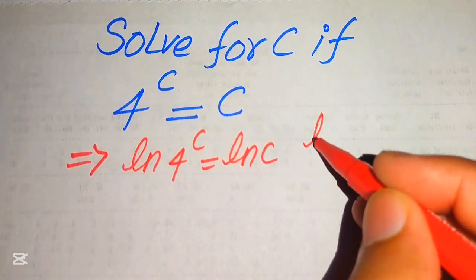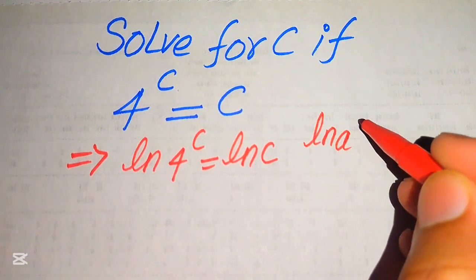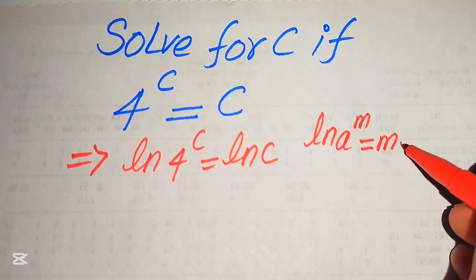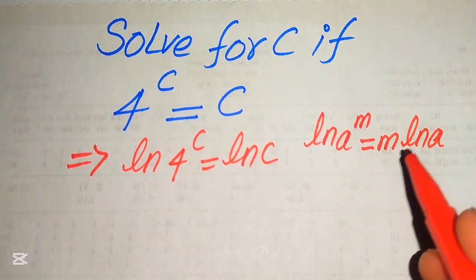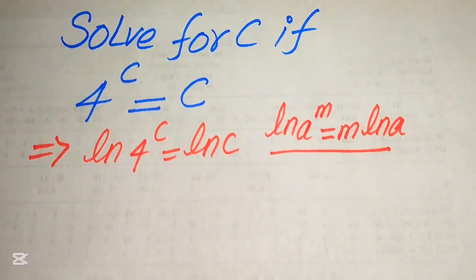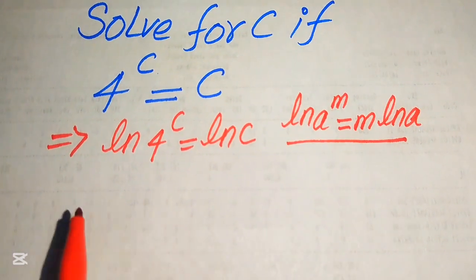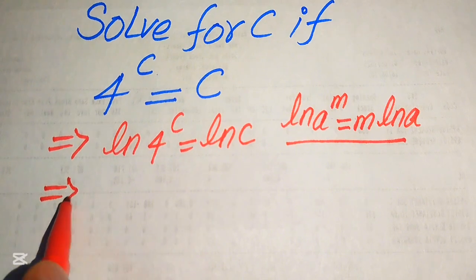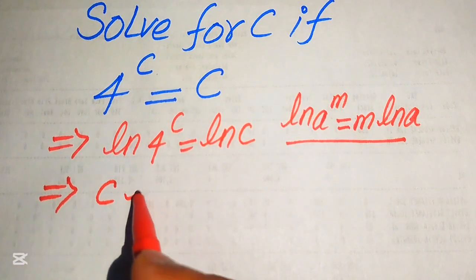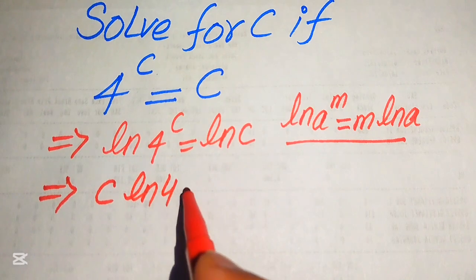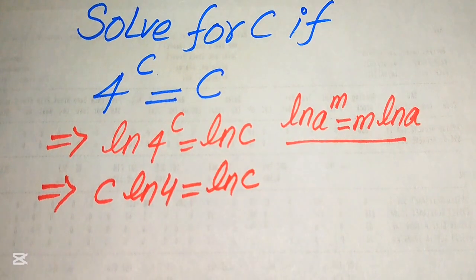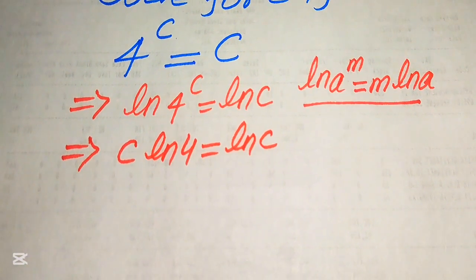On the left hand side, we apply the property of natural log: if you have log of a to the power of m, it is written as m times log a. According to this property, we move the exponent to the front of the log, and it is written as c times log 4 is equals to log of c.